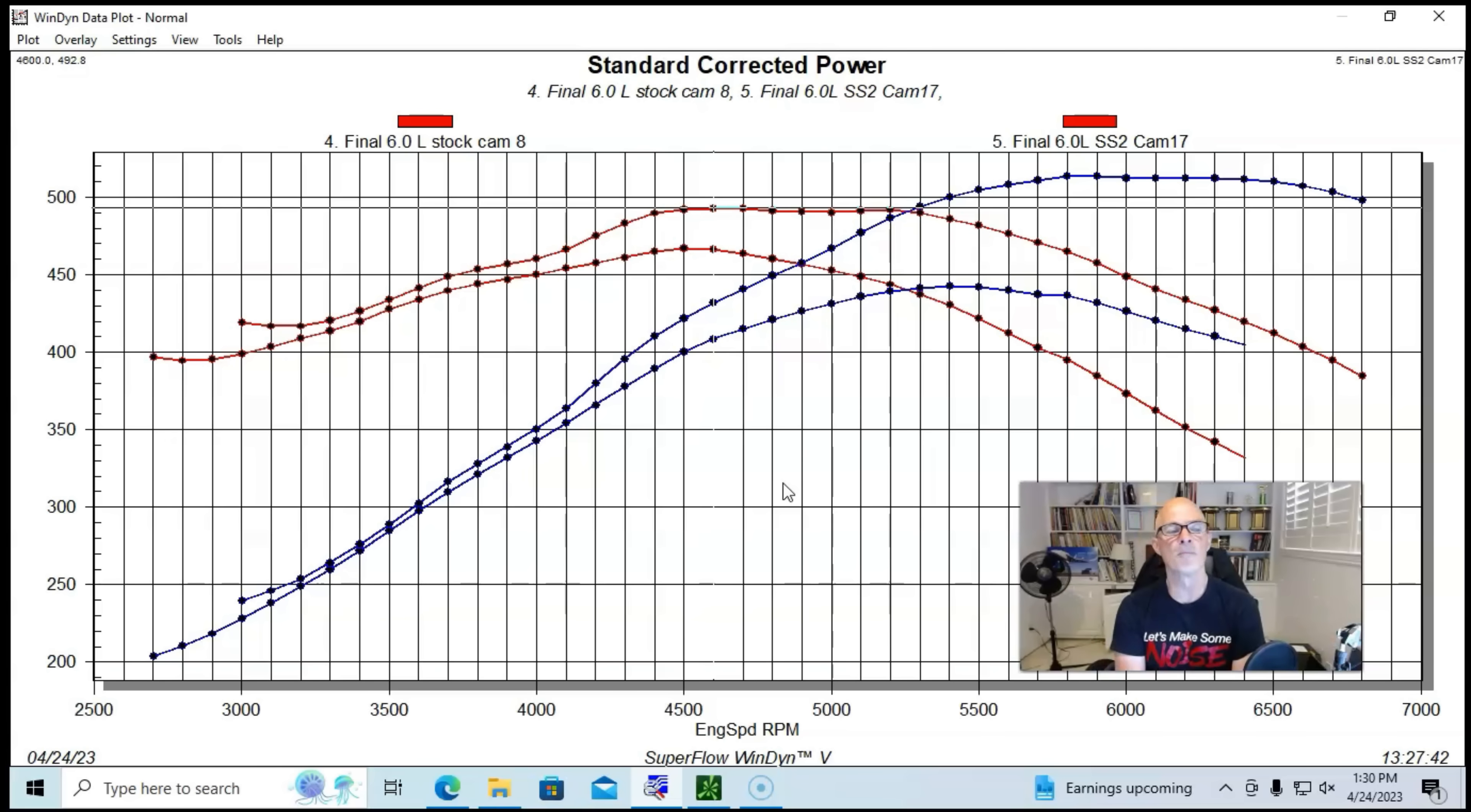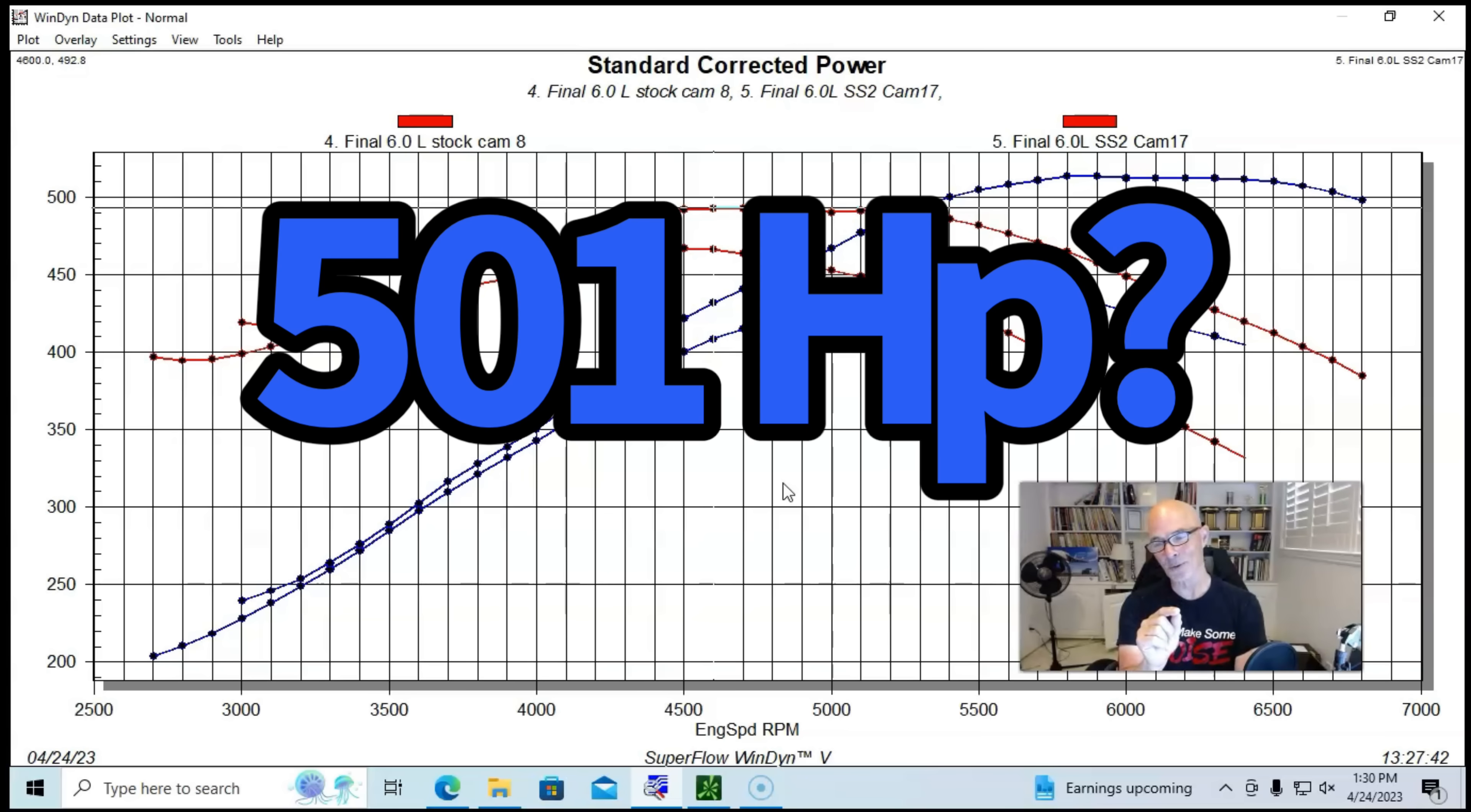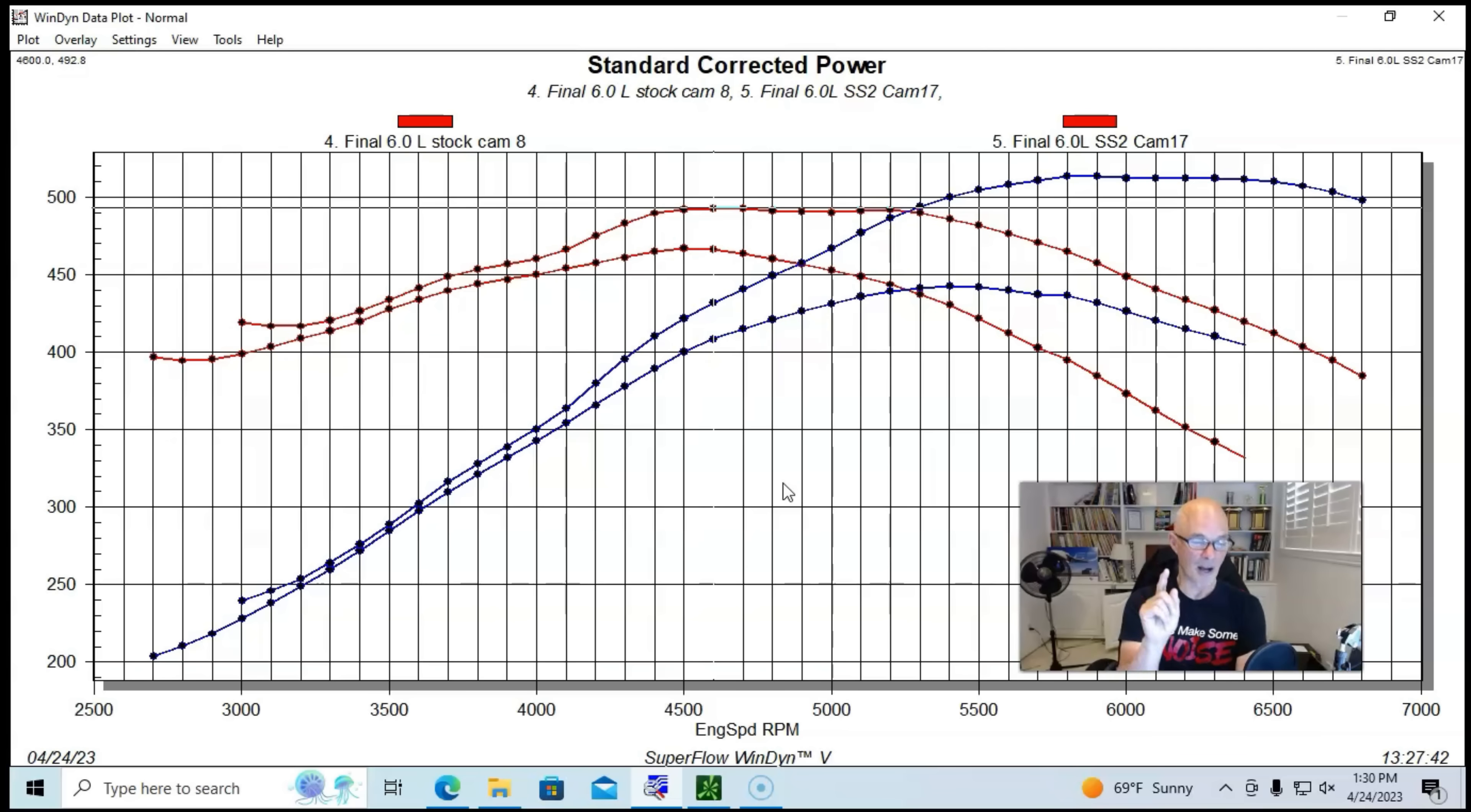But on this particular motor, my guess, truck Norse cam on this particular 6 liter is going to be right near a 500 horsepower cam, and it's going to make more than 490 foot pounds of torque. My guess is 501 horsepower and 492 foot pounds of torque with a truck Norse cam on a 6 liter.